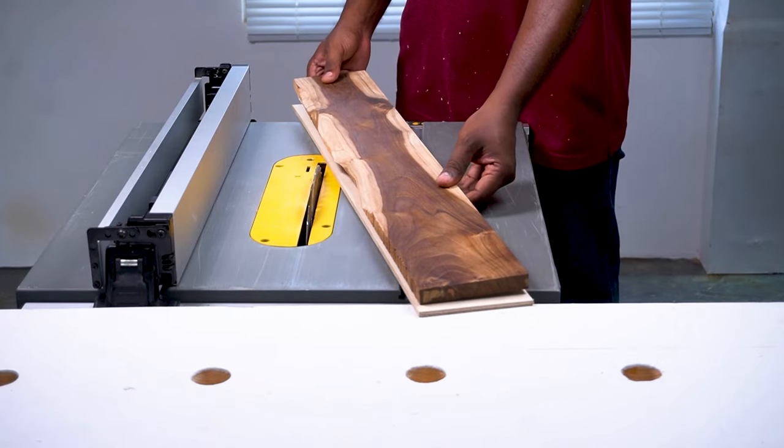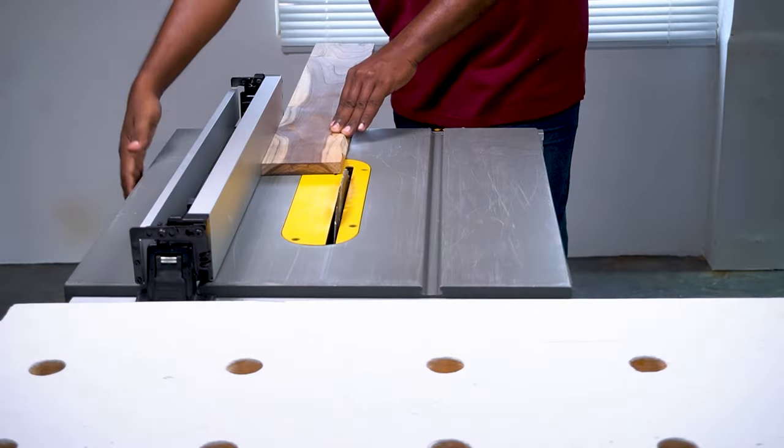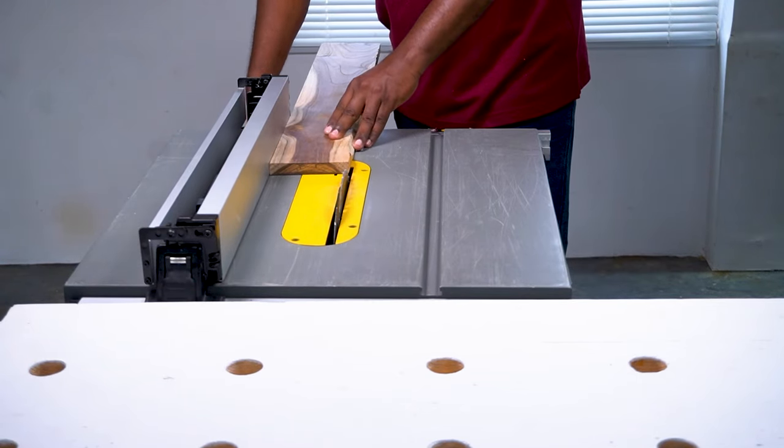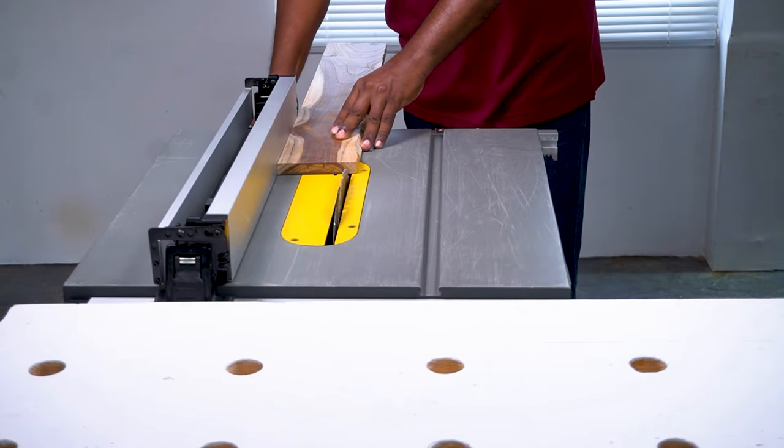The next step is to straighten out the other long edge. Since one edge has been straightened, we can use that edge as a reference. Place the straightened edge flush against the rip fence to make the second cut. Adjust the rip fence to the appropriate width you need in the board.